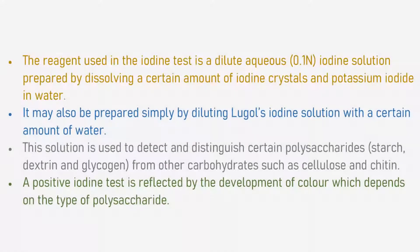The reagent used in the iodine test is a dilute aqueous iodine solution prepared by dissolving a certain amount of iodine crystals and potassium iodide in water. It may also be prepared simply by diluting Lugol's iodine solution with a certain amount of water.